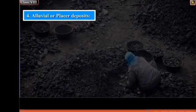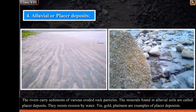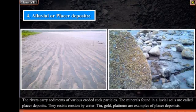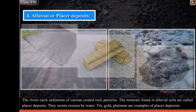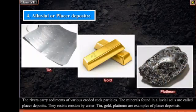Alluvial or Placer Deposits: Rivers carry sediments of various eroded rock particles. The minerals found in alluvial soils are called placer deposits. They resist erosion by water. Tin, gold, and platinum are examples of placer deposits.